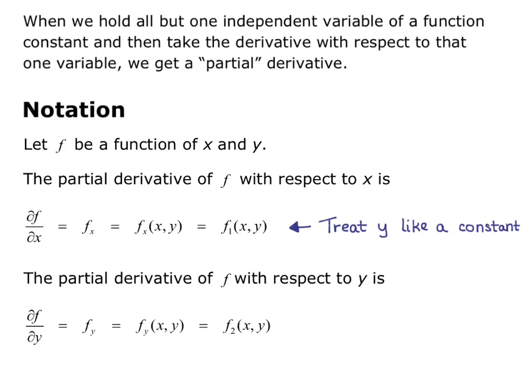The partial derivative of f with respect to y is partial f over partial y — that curly scripty d. It can also be written as f sub y, or f sub y of (x, y), or f sub 2 of (x, y). When we take this derivative, we treat x like a constant, and that finds basically the change in f over change in y if we're moving in the y direction.